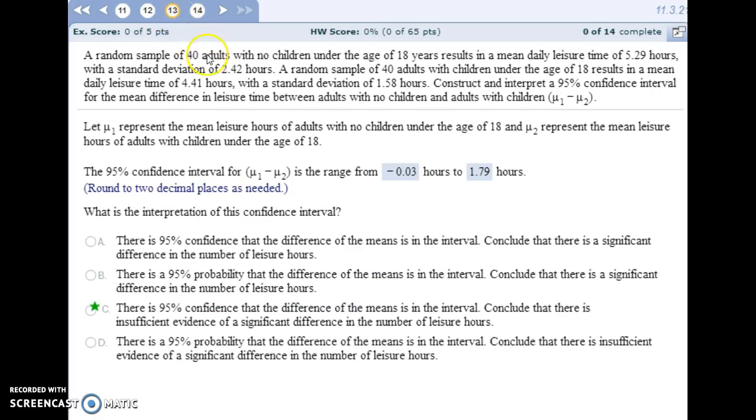For number 13, we're comparing the amount of leisure time between adults with no children under 18 and then adults with children under 18. And like with any comparison of two populations like this, any hypothesis test, we need to start by identifying our null hypothesis and our alternative hypothesis. And there's nowhere we need to enter them in this particular problem, but you'll need to understand what they are in order to answer the second part here.